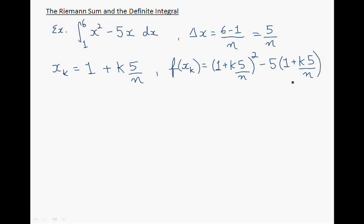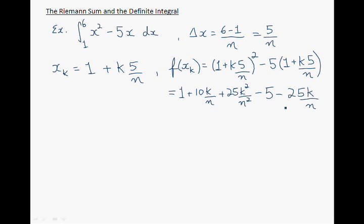The next step is to expand this expression and then simplify. So when I raise this expression to the power of 2, I have 1, plus 2 times 1 times k times 5 over n, which gives 10k over n, plus 25k squared over n squared. Now minus, and I simply distribute the 5 inside, so I have 5 minus 25k over n. And this expression simplifies, with the terms in order from highest to lowest power.